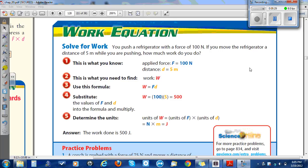Work equation. Solve for work. You push the refrigerator with a force of 100 newtons. If you move the refrigerator a distance of 5 meters while you're pushing, how much work do you do? Number one, this is what you know. You have an applied force F of 100 newtons and a distance D of 5 meters. This is what you need to find: Work. Use this formula: Work equals force times distance. Substitute the values of F and D into the formula and multiply. Work equals 100 times 5 equals 500. Determine the units. Units of work equals units of force times distance equals newtons times meters equals joules. The work done is 500 joules.